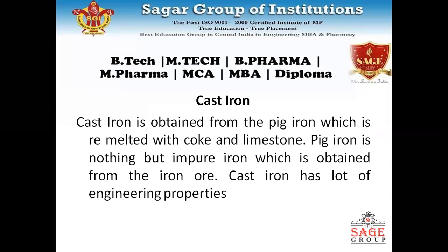Cast iron is obtained from the pig iron which is remelted with coke and limestone. Pig iron is nothing but an impure iron which is obtained from the iron ore. Cast iron is a raw iron available on the earth.